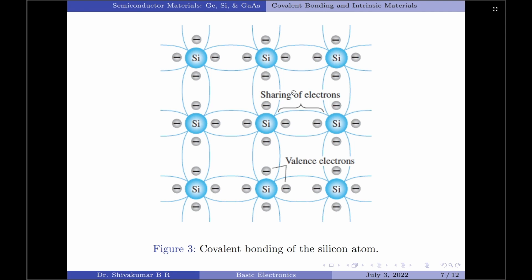This particular structure shown here for each of the silicon atoms is called a covalent bond. Please note that this particular diagram has a single crystal structure — that is, we have the same atom, silicon, appearing everywhere.